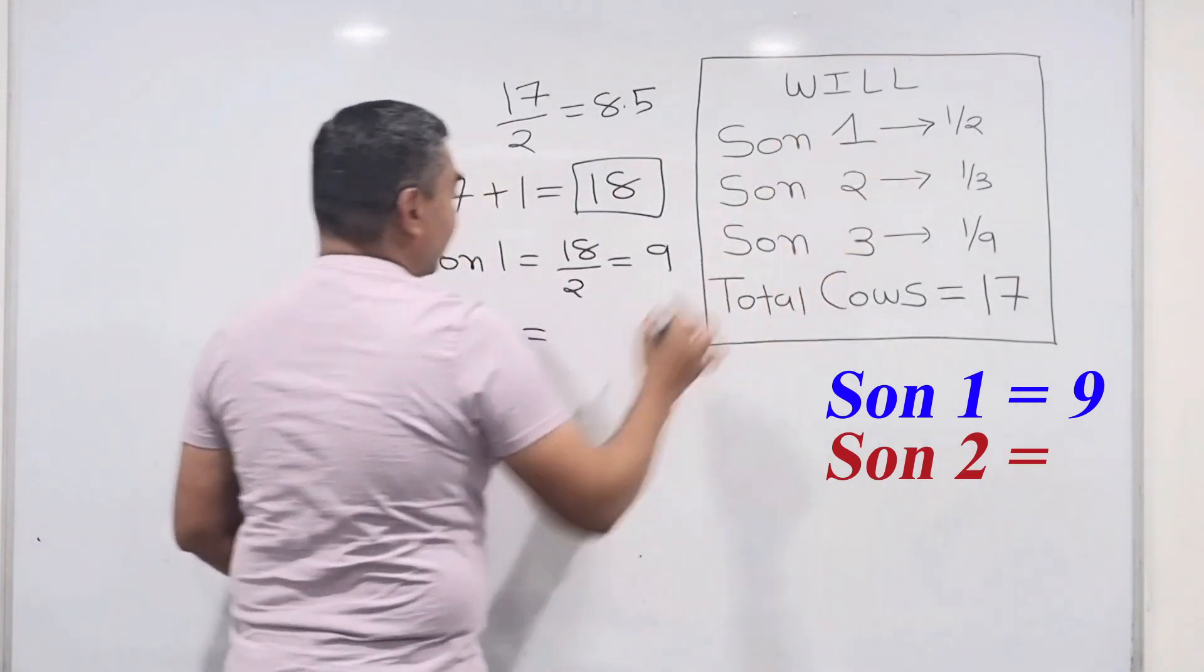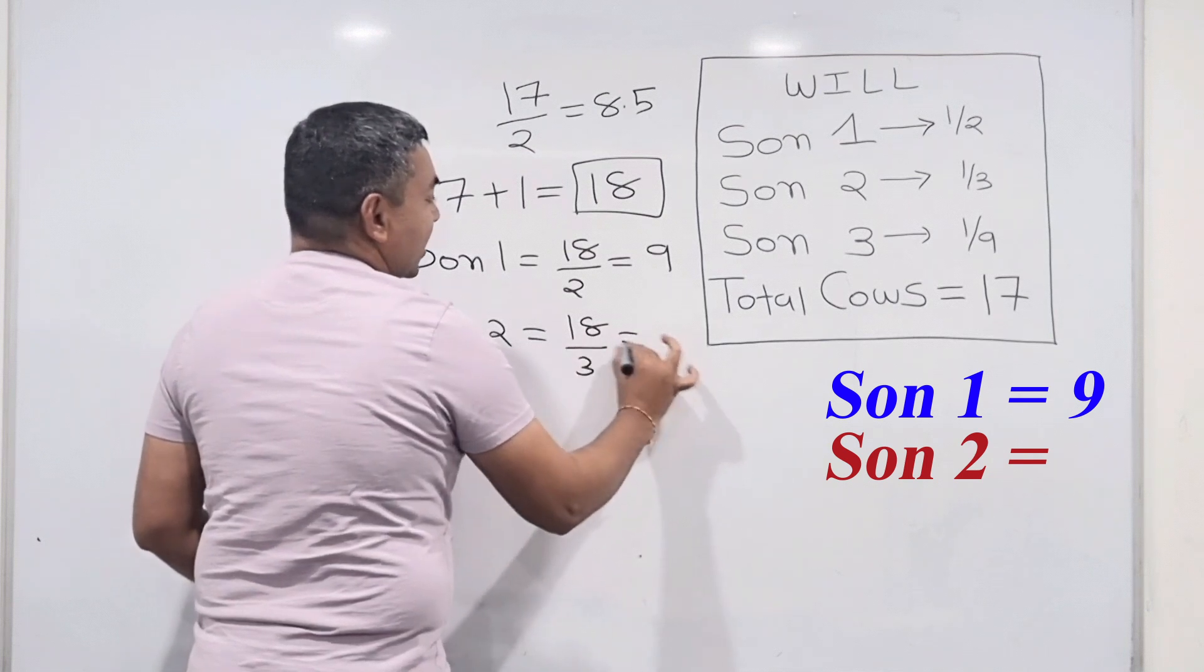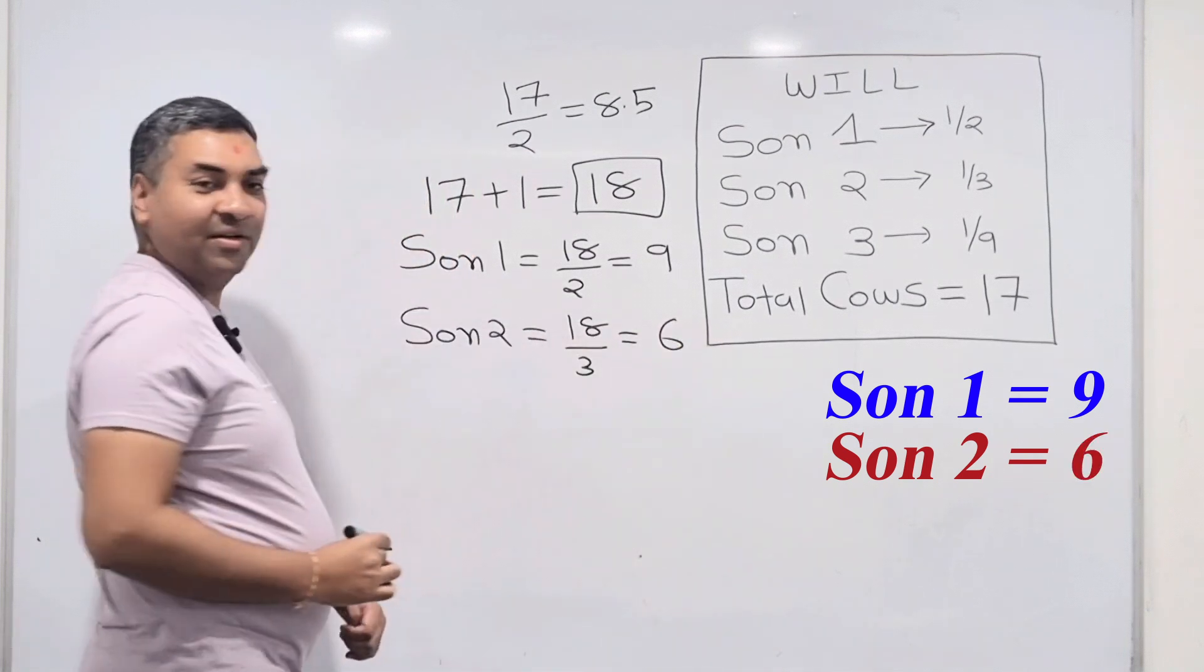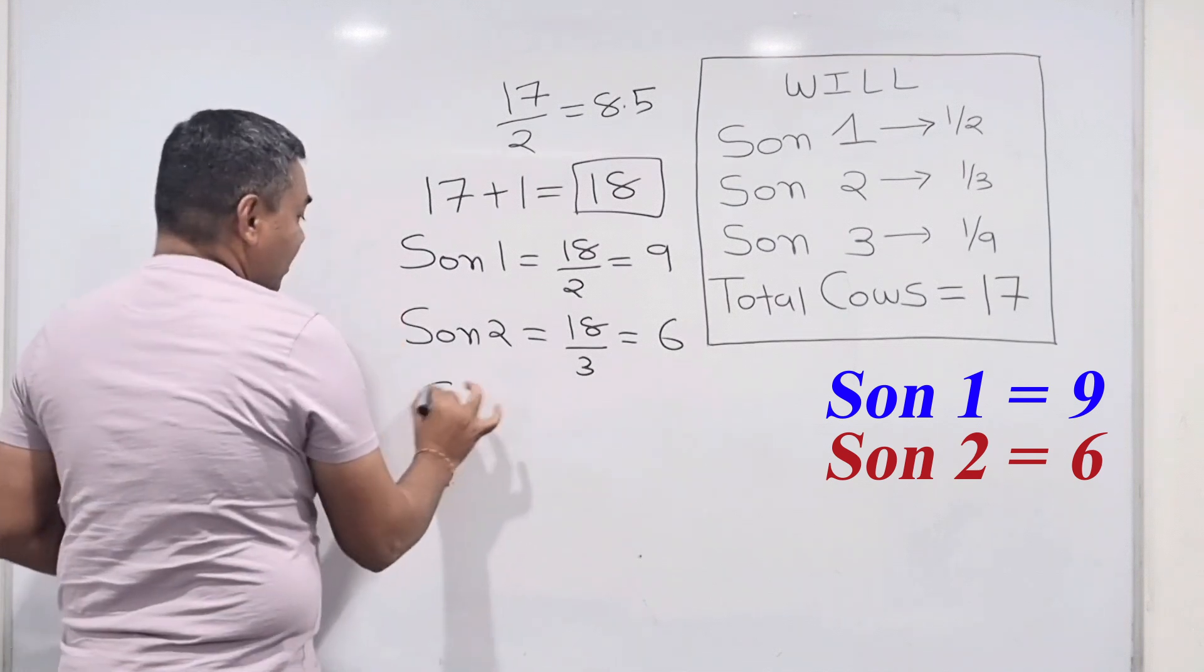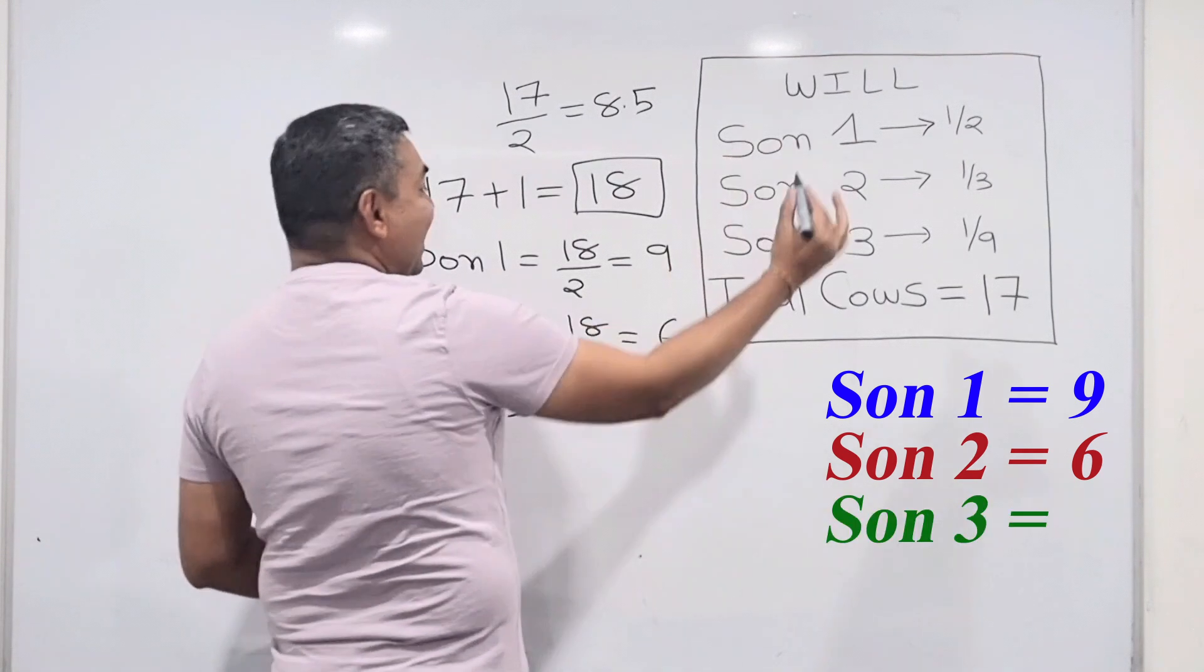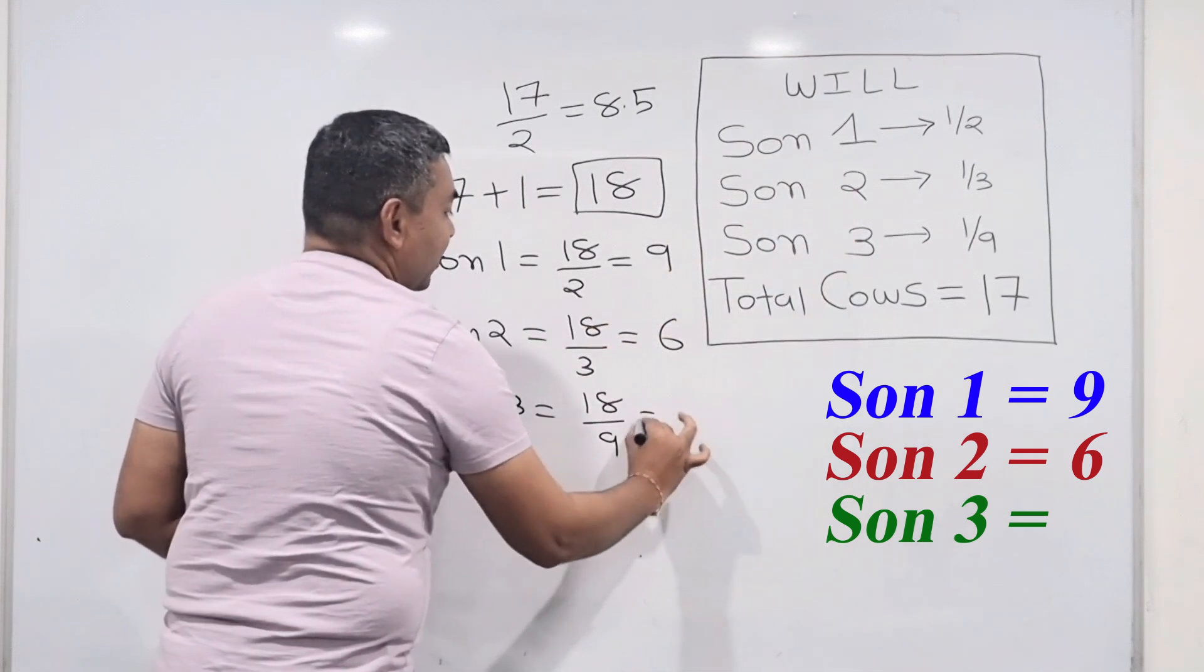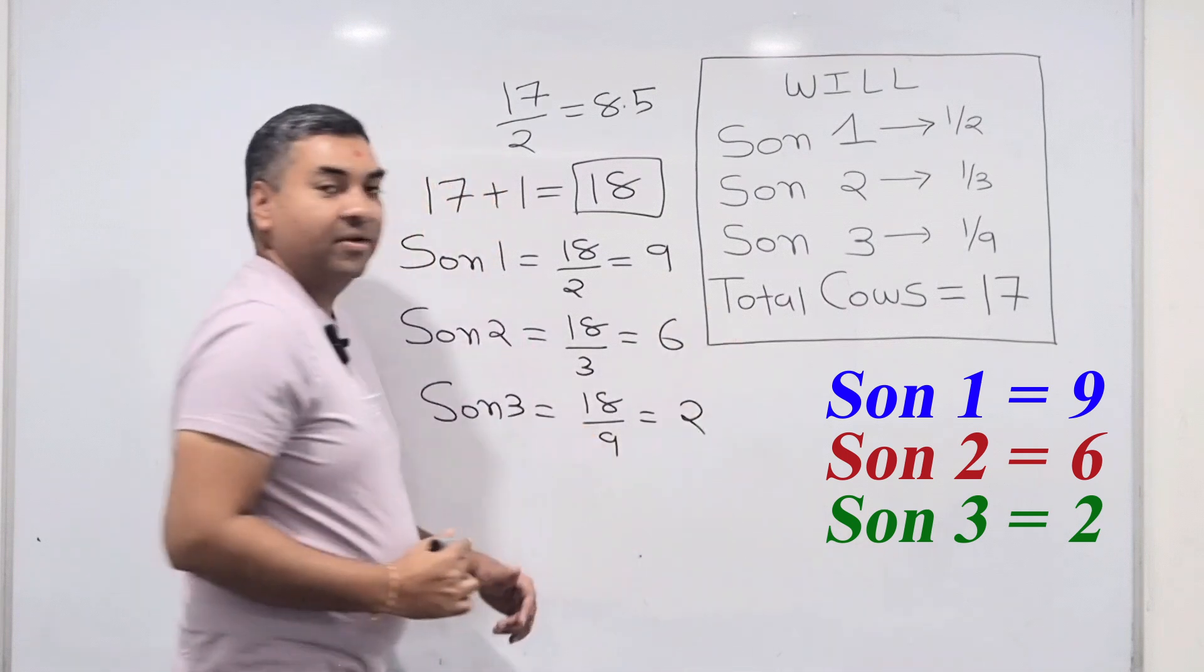And the youngest one, son number three, will be getting one ninth, which is 18 divided by 9, so he'll be getting 2 cows. So that's how he has distributed.